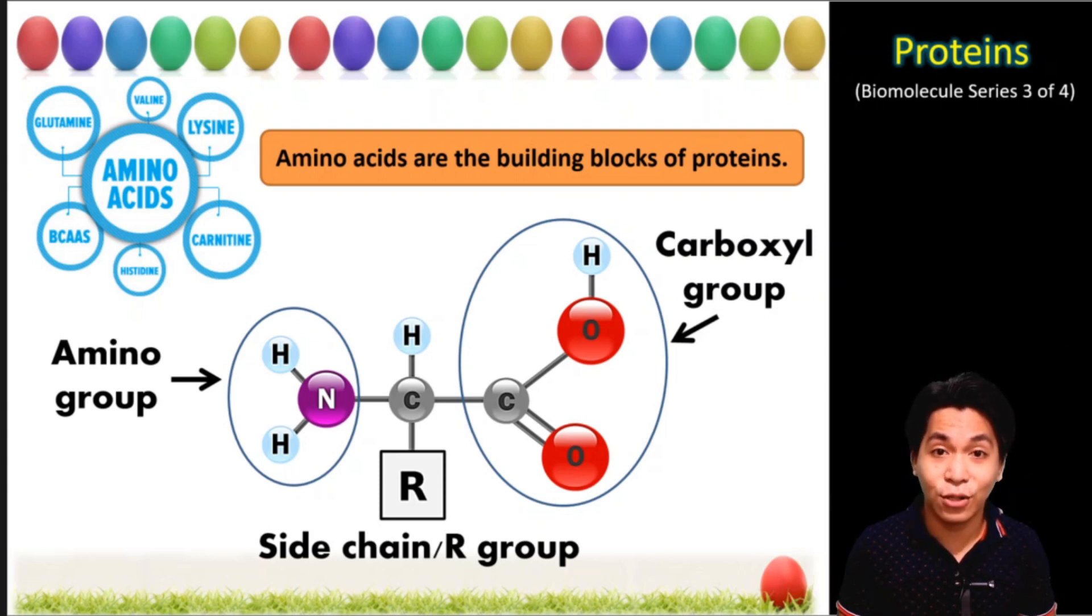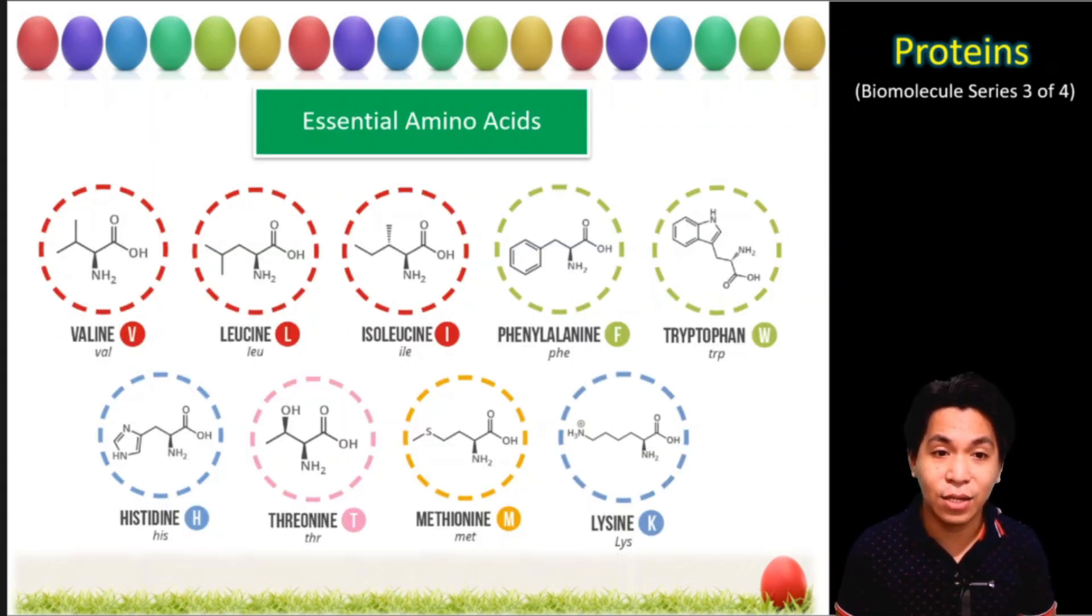Amino acids are classified into two types. You have the essential amino acids and the non-essential amino acids. Essential amino acids include the following: valine, leucine, isoleucine, phenylalanine, tryptophan, histidine, threonine, methionine, and lysine.